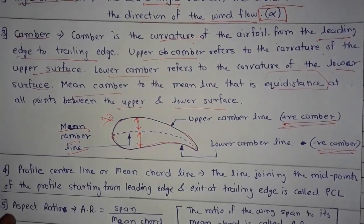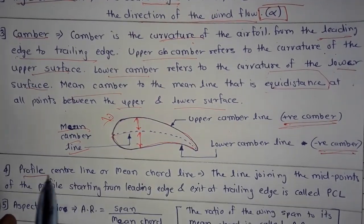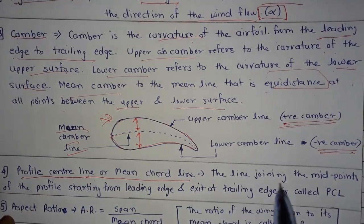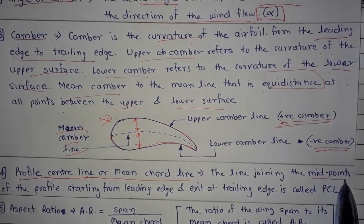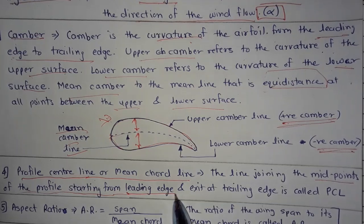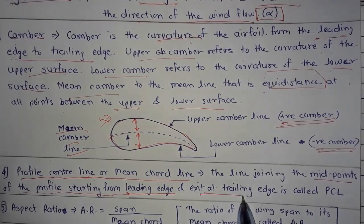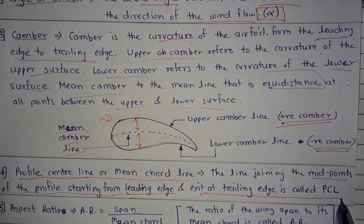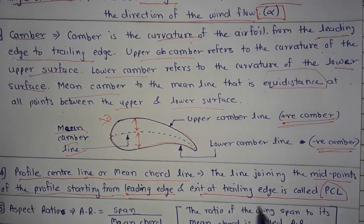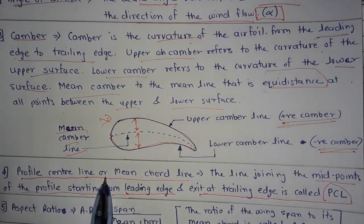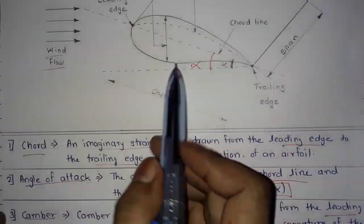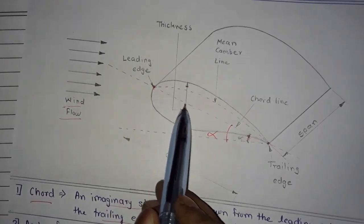Next is the profile center line, or mean cord line. The line joining the midpoints of the profile starting from the leading edge and exiting at the trailing edge is called the profile center line. It is similar to the cord line, as seen in the diagram.